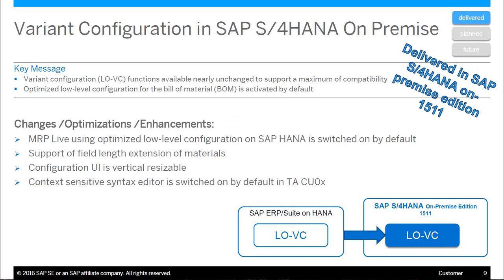Looking at changes, optimizations, and enhancements in the current release: with S4 HANA, we released an MRP optimization. VC has what's called low-level MRP processing, and in the past that was a challenge from a performance standpoint for certain customers. With S4 HANA and the HANA database, we had the opportunity to capture performance improvements, and that's what we did. MRP optimization has actually been available for a while on S4 HANA and is turned on by default, though you can turn it off to return to the classical mode.